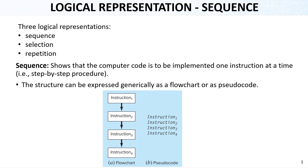Sequence shows that the computer code is to be implemented one instruction at a time — that means it is a step-by-step procedure. The structure can be expressed generally as a flowchart or as pseudocode. It starts with instruction one, then goes to instruction two, then instruction three and instruction four. In pseudocode, all those instructions are written in a sequential way.